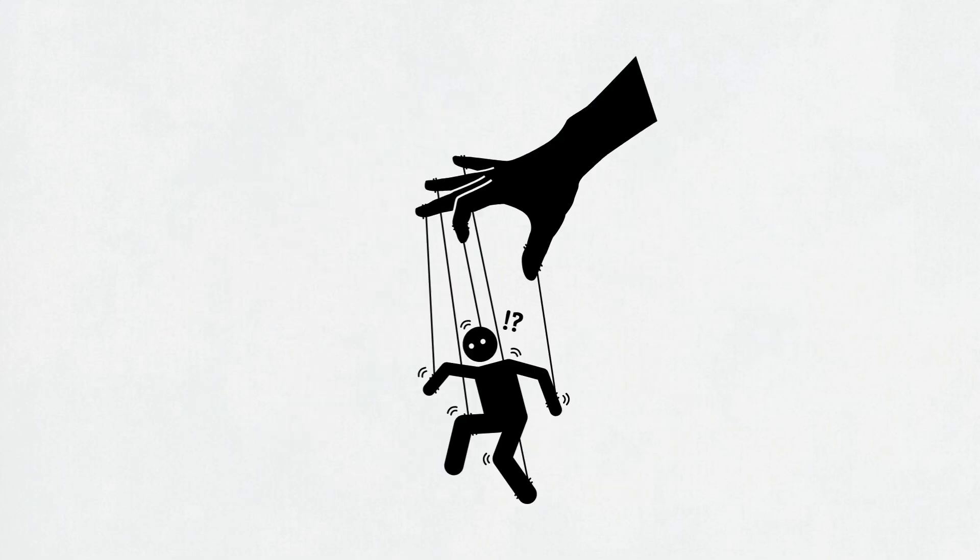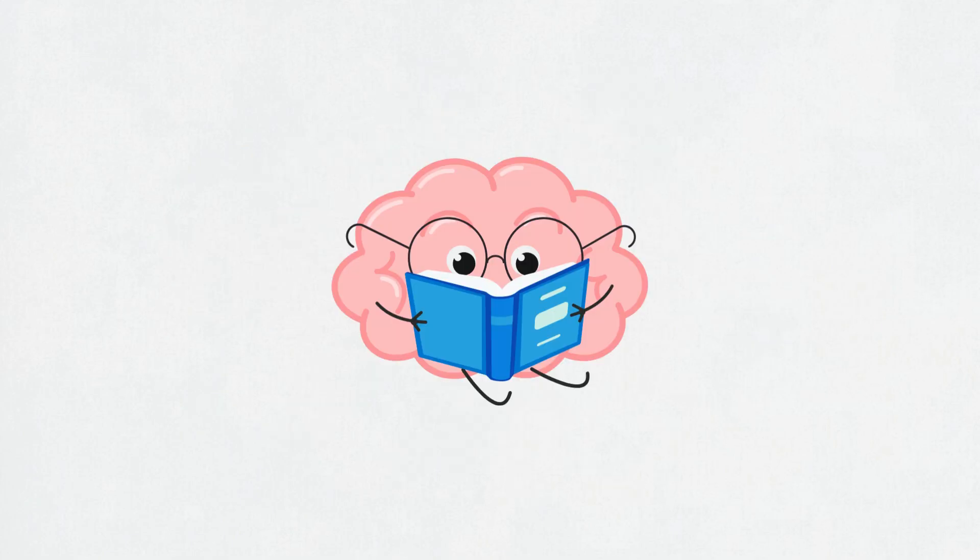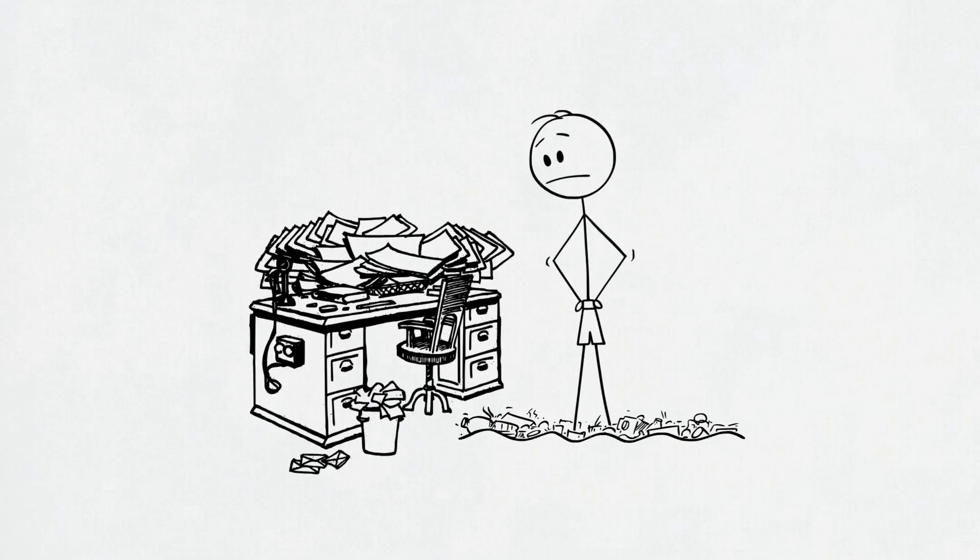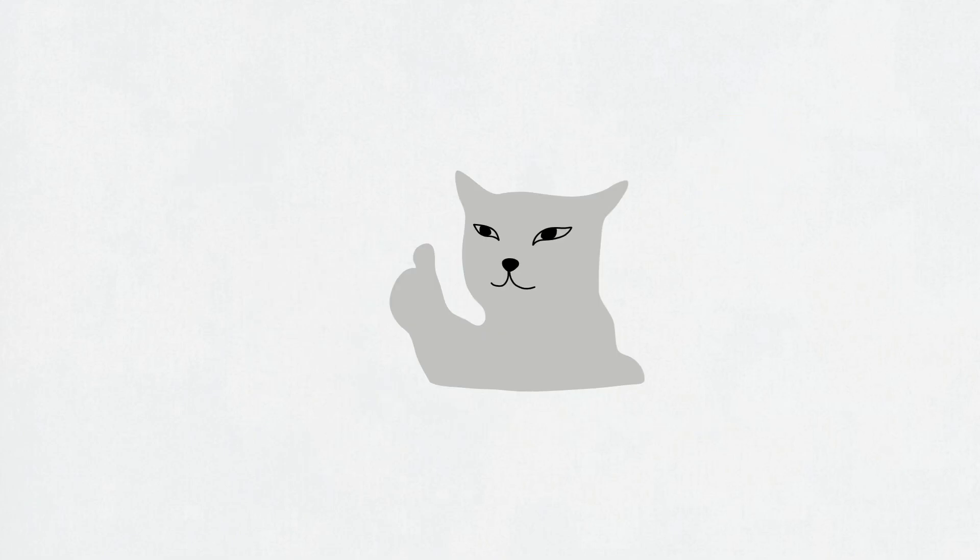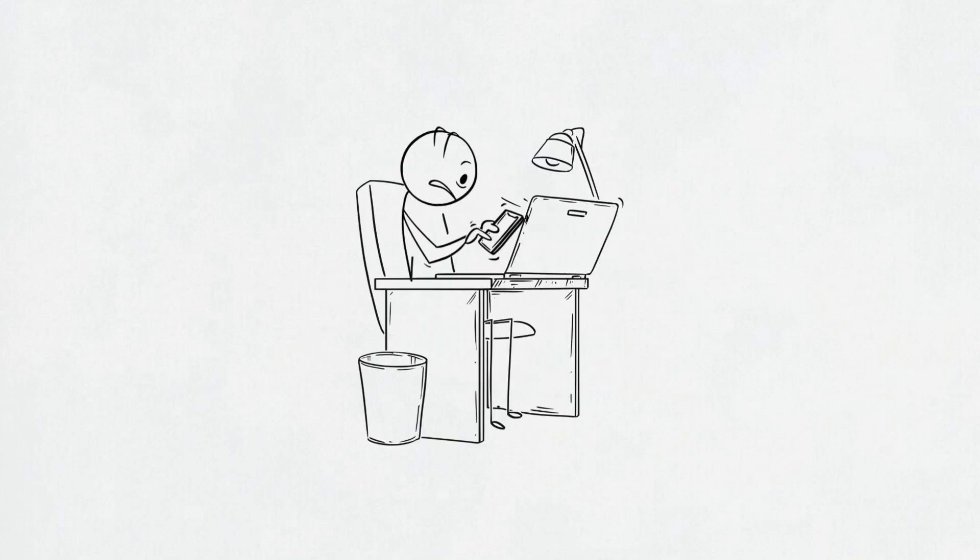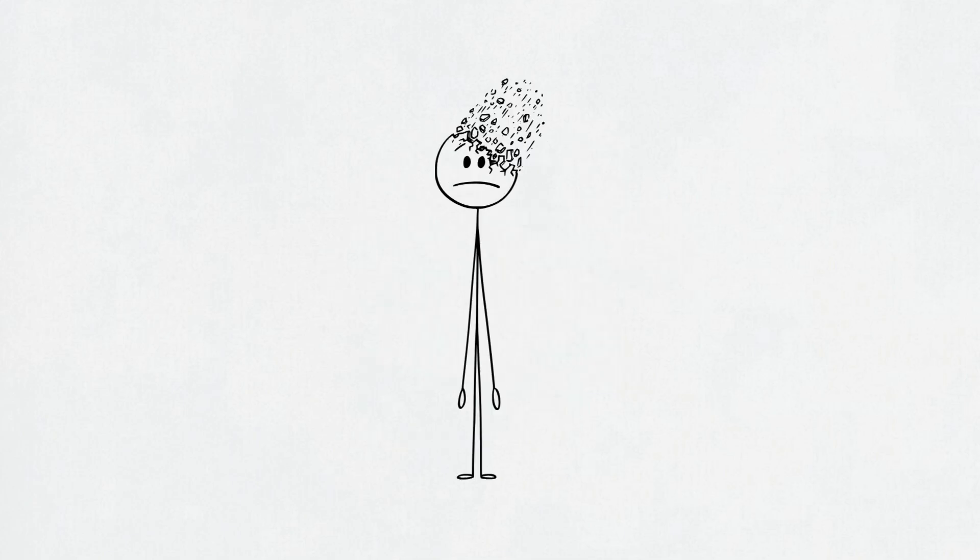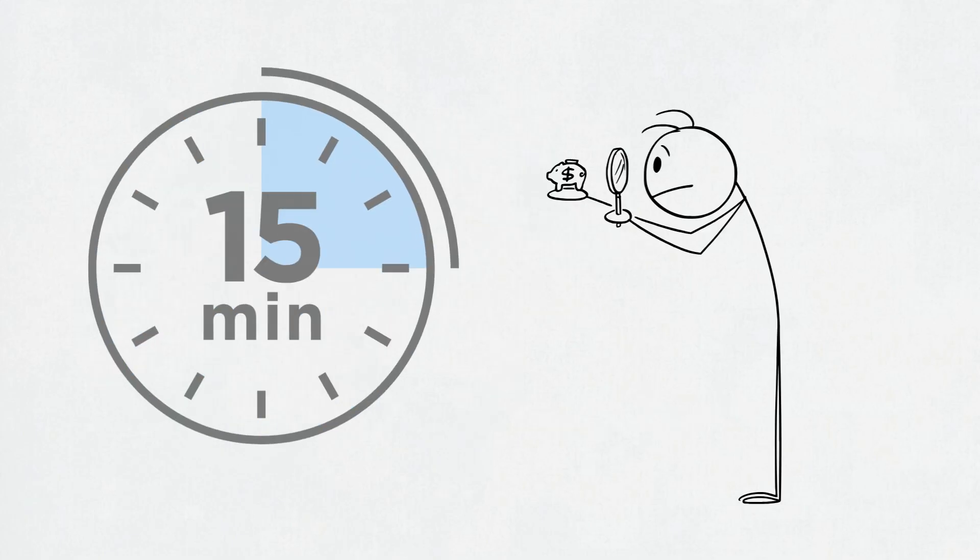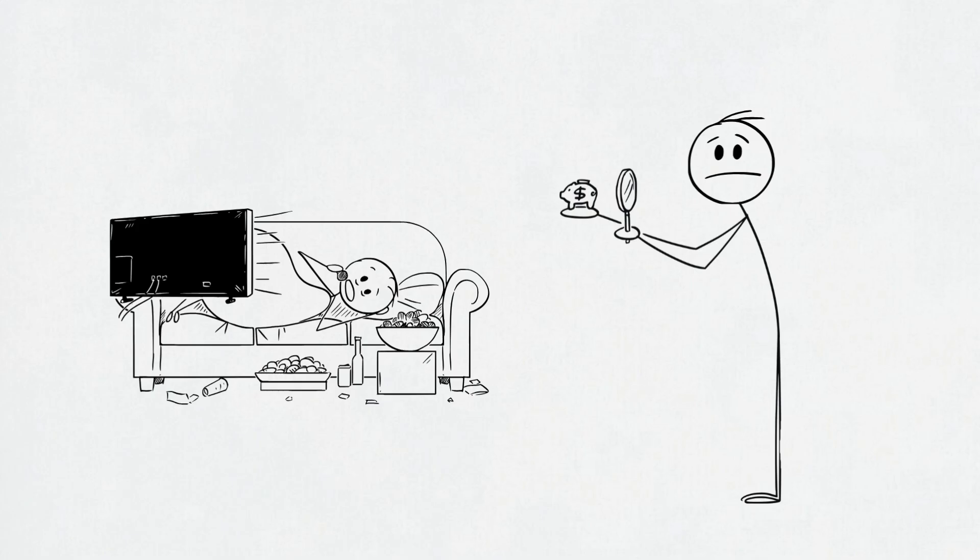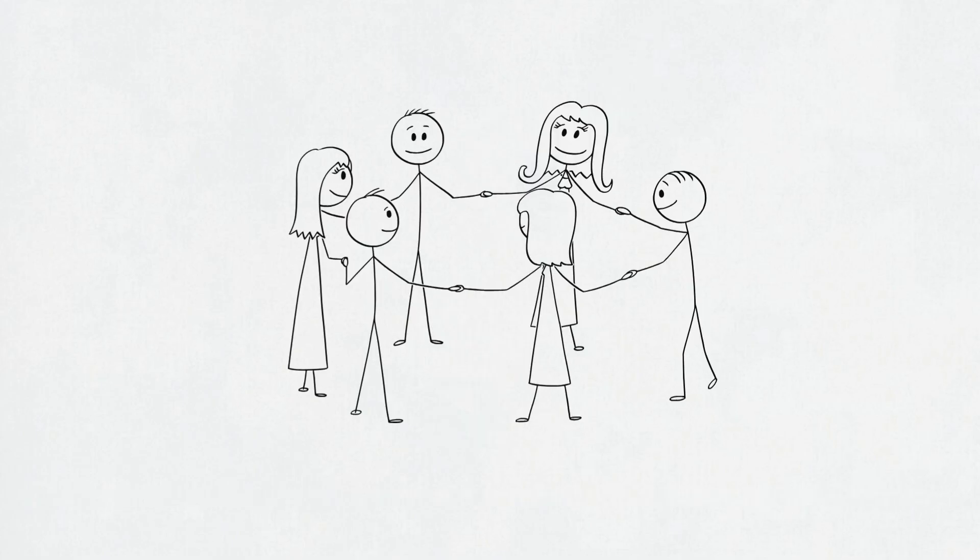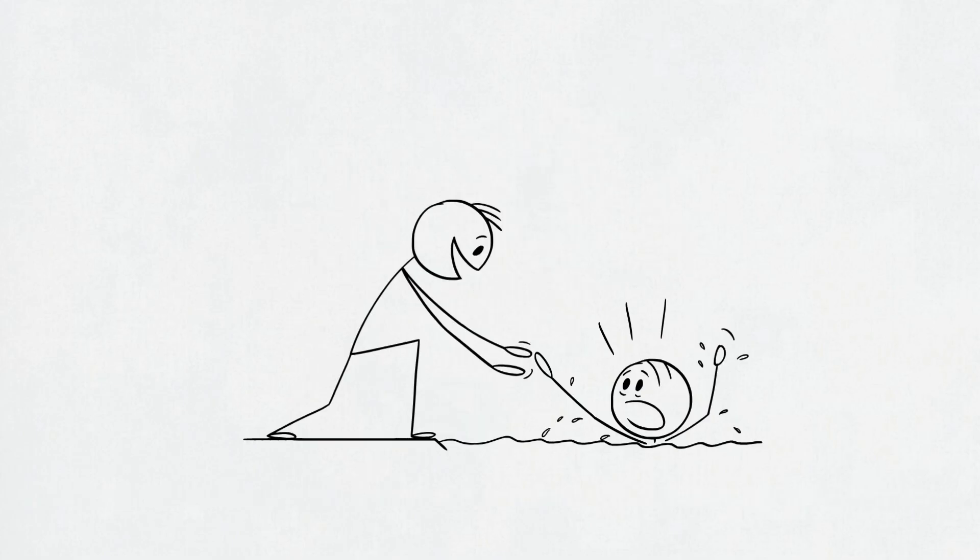But here's the kicker. Controlled attention isn't just a brain thing. It's shaped by your environment, your habits, and your motivation. If your space is cluttered, your phone's buzzing, and you've got 43 tabs open, yeah, good luck focusing. Your habits matter too. Every time you stop mid-task to check your phone, you're training your brain to be distracted. When you're bored or overwhelmed, your attention span shrinks faster than your will to meal prep on a Sunday. Bottom line? Controlled attention is partly under your control, but your surroundings and your mindset either help it or destroy it.